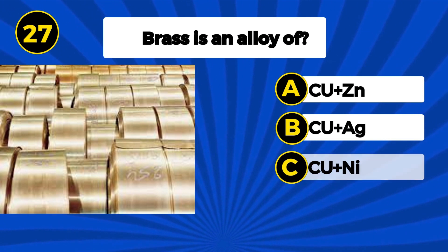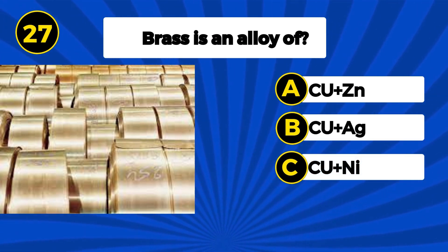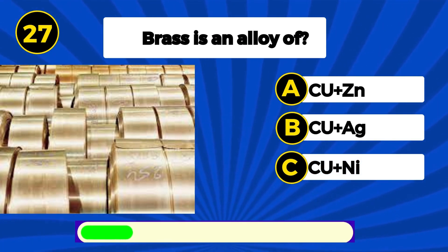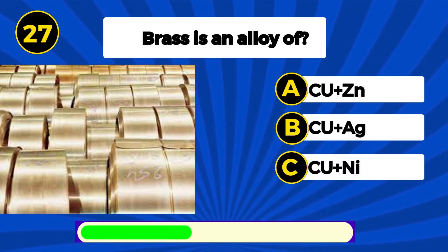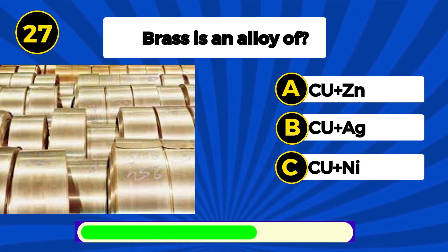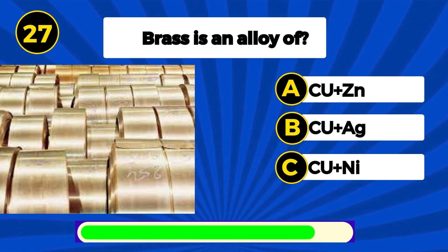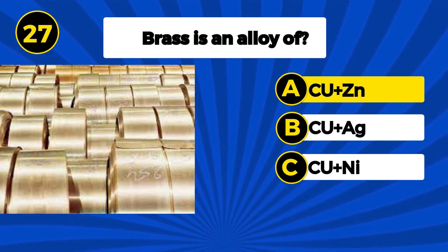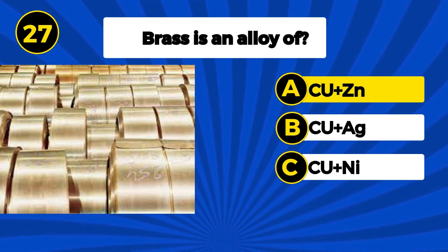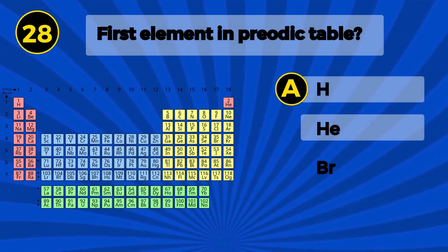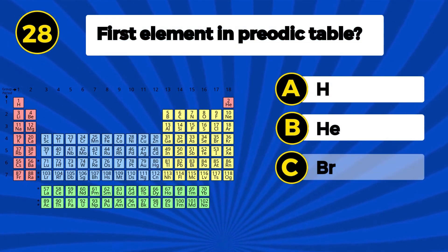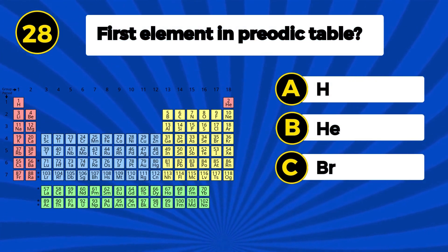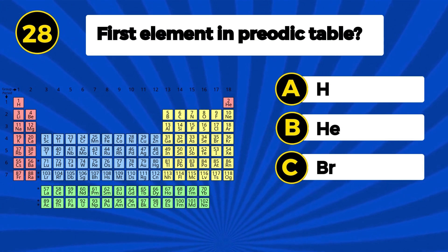What is used to avoid melting of ice? Gelatin. Brass is an alloy of? Copper and zinc. First element in the periodic table?